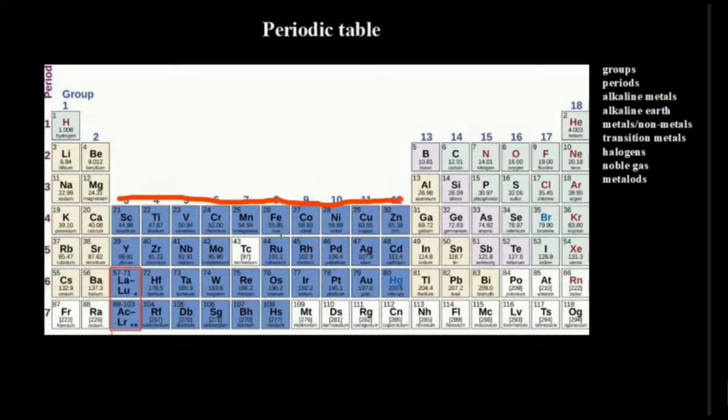Now before we continue to say more about the transition metals, let's just shift to the 13th group and all the way to the 14th, 15th, 16th, and 17th to 18th. Now these groups can also be referred to as group 3A, group 4A, 5A, 6A, 7A and 8A.